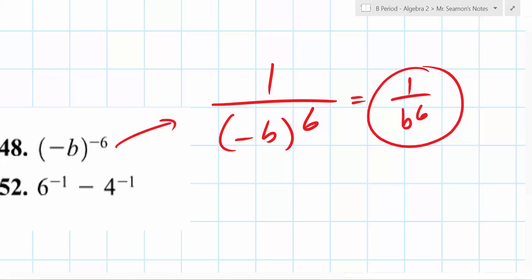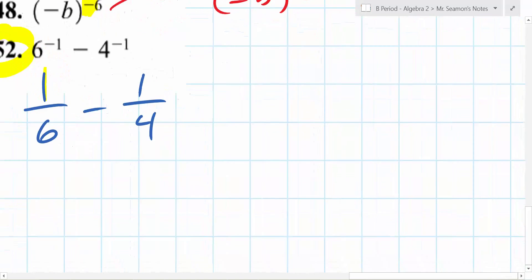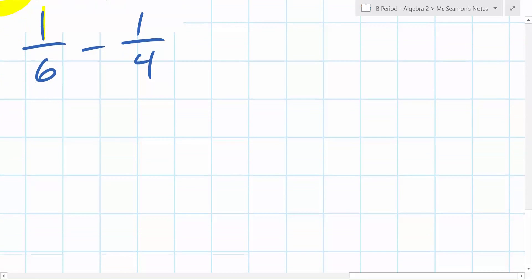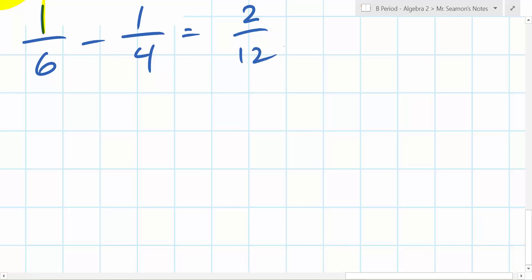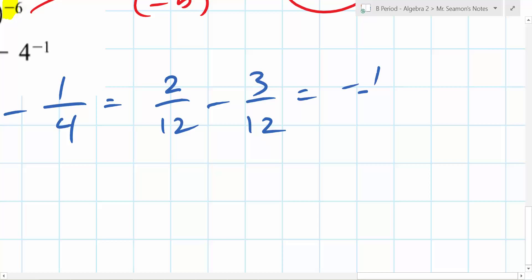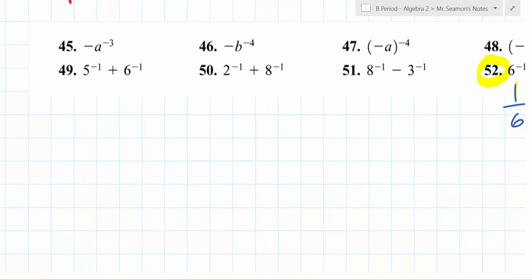So with first... Oh, I don't want highlighters. 1 over 6 minus 1 over 4. So what do you need? You need a common denominator to subtract fractions. So you get a common denominator. 12 would be your lowest common denominator. So 2 twelfths minus 3 twelfths is... Negative 1 twelfth. Negative 1 twelfth. Yep. There it is. Nice.